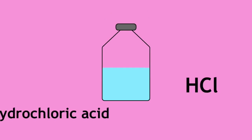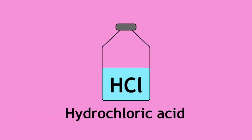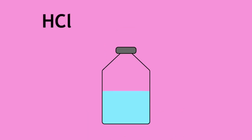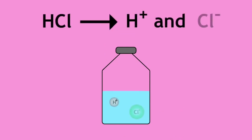An example of an acid that you are likely familiar with is hydrochloric acid. Hydrogen chloride dissolves in water to give hydrochloric acid, and will dissociate to give a proton and a chloride ion.